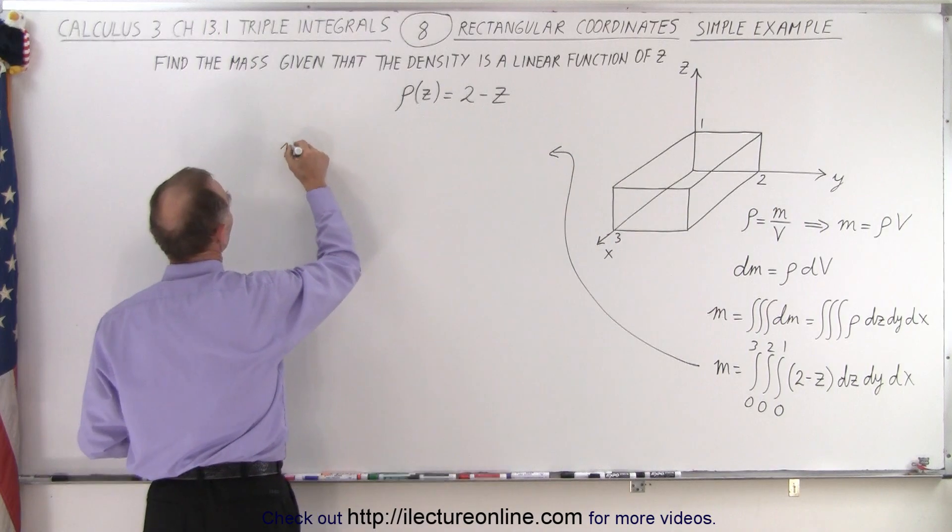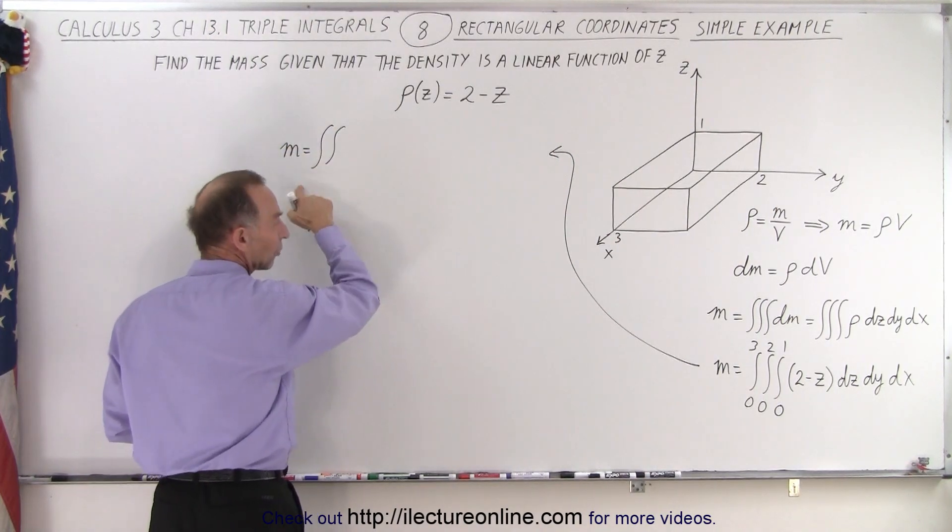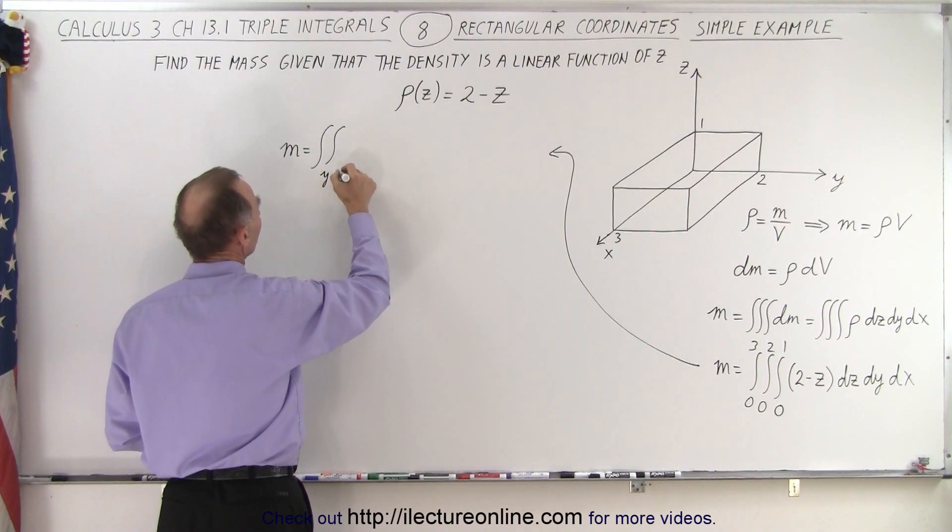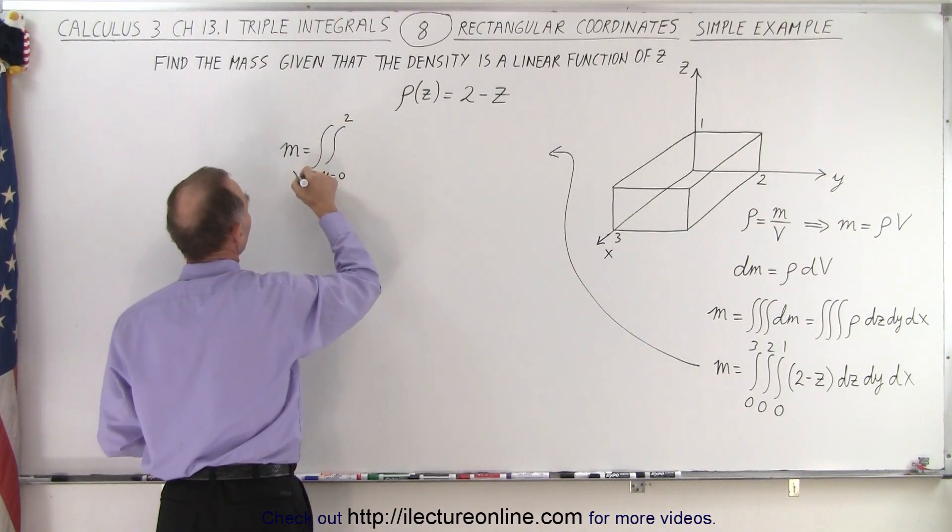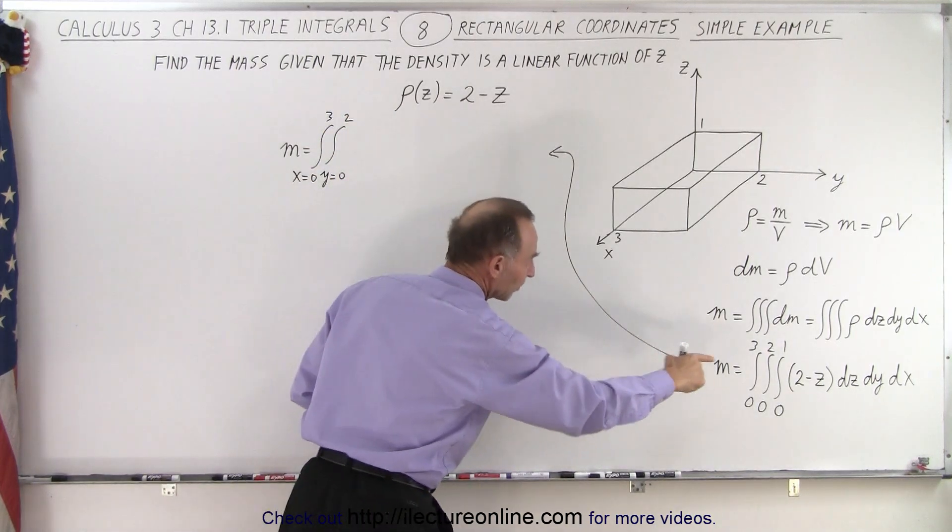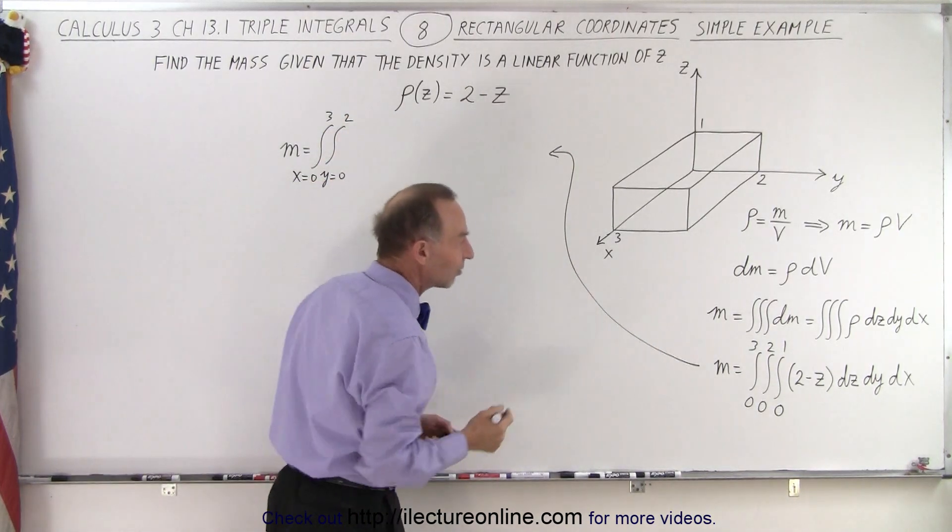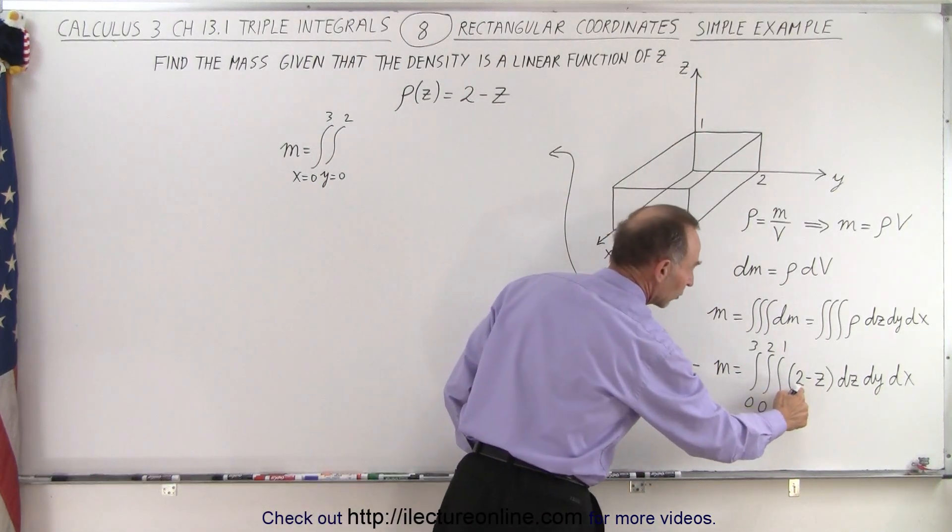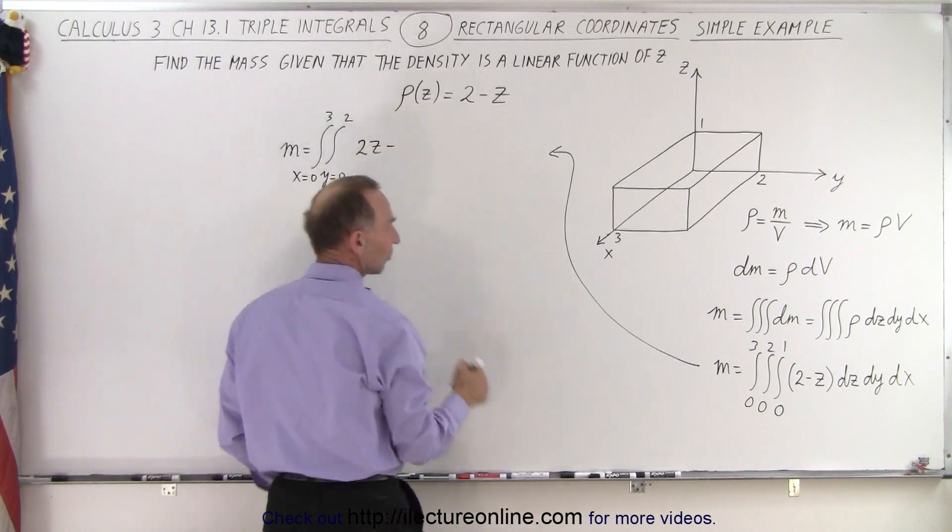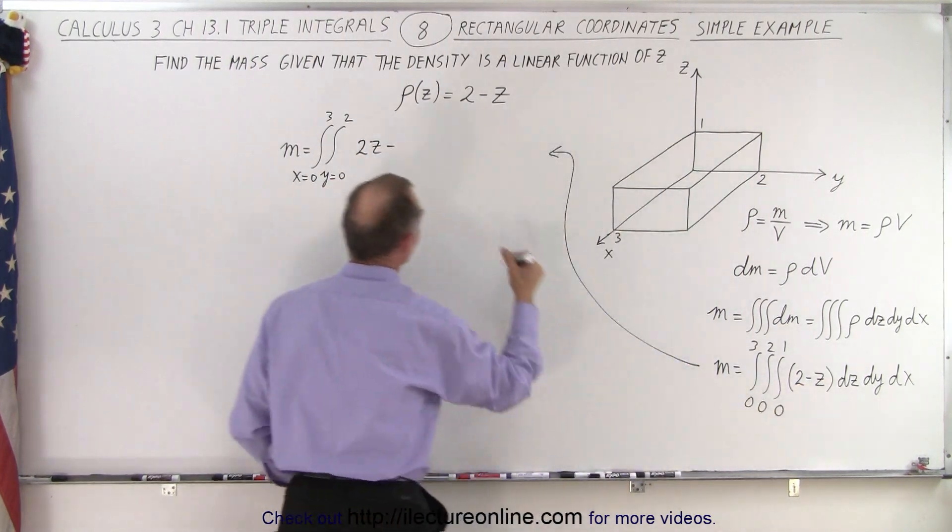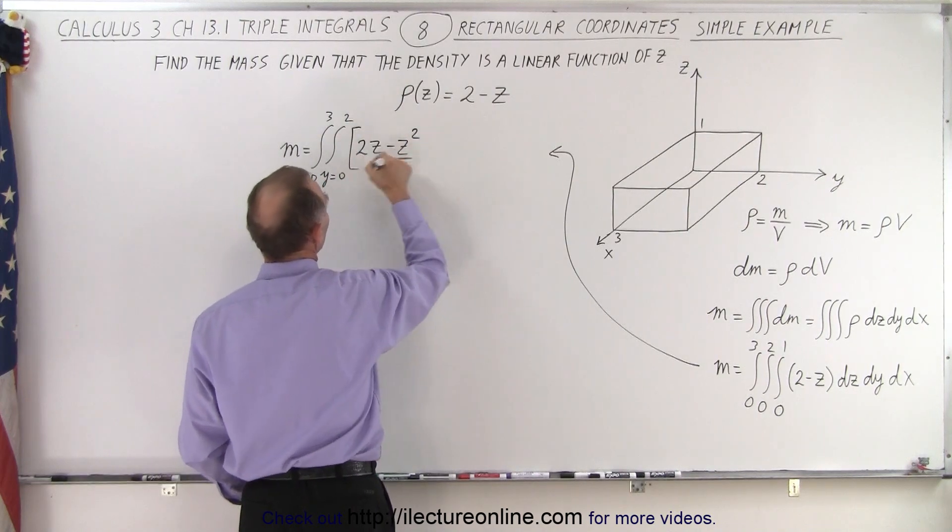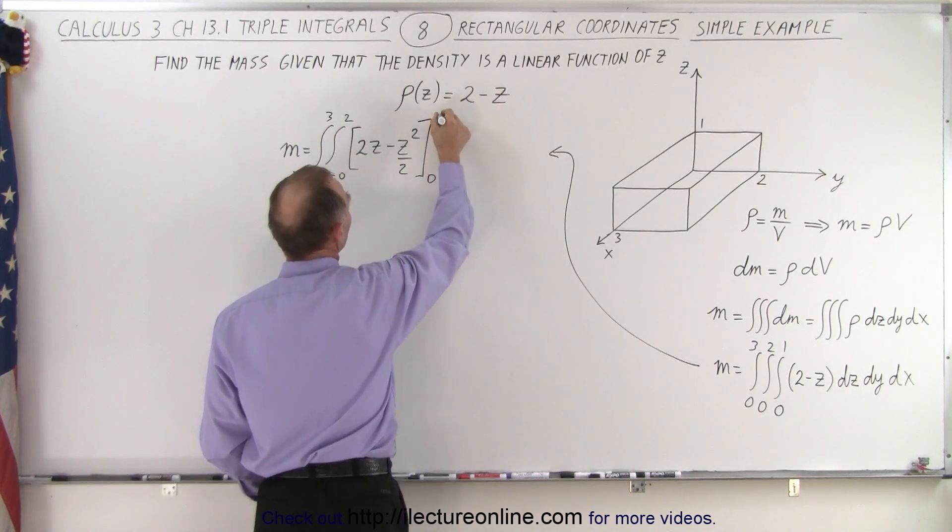So the mass is going to be equal to the other two integrals from y equals 0 to 2, and from x equals 0 to 3. And then in the z direction, we have 2 minus z integrated. So 2 dz integrated becomes 2z, minus z integrated becomes z squared over 2.